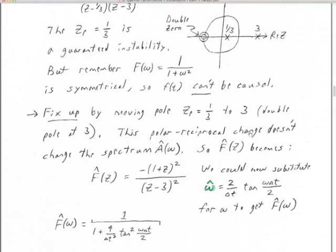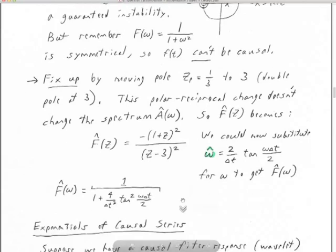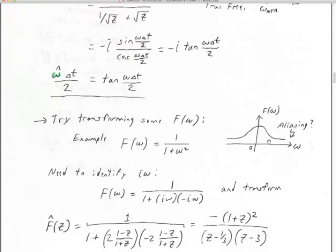Now to go further and explore Kolmogorov factorization, we've got to talk about using a causal series as an exponent. That's a weird concept — we've done all sorts of things with time series: putting them in denominators, dividing them as polynomials. Now we're going to take a time series, take its Z transform, and make that an exponent. There's an algebraic reason for doing this. We have a causal filter response — a causal time-domain filter, a wavelet. We'll call it C of t. We take its Z transform: capital C of Z. We take the omega definition of Z and form the Fourier transform C of Z evaluated at omega.